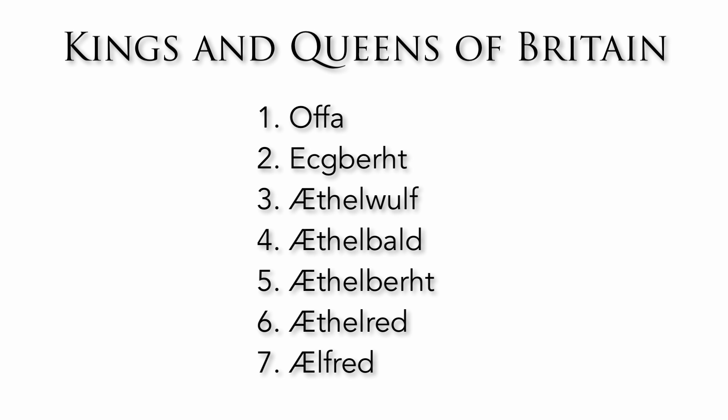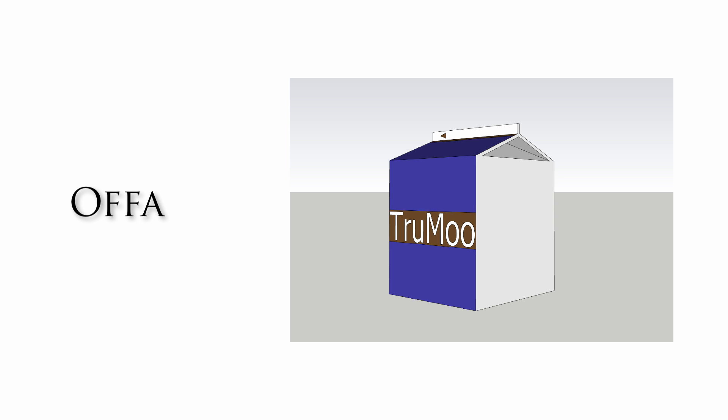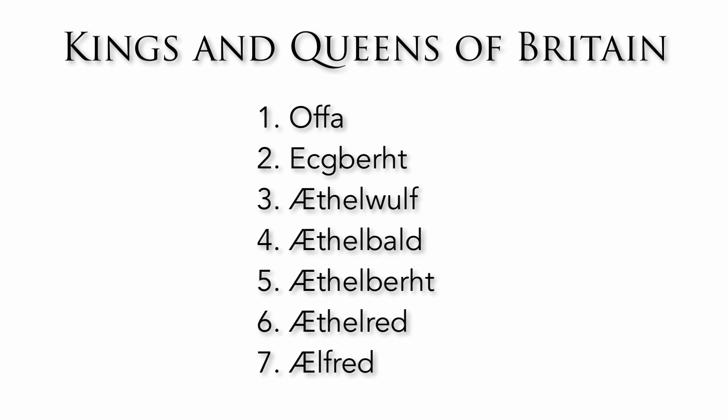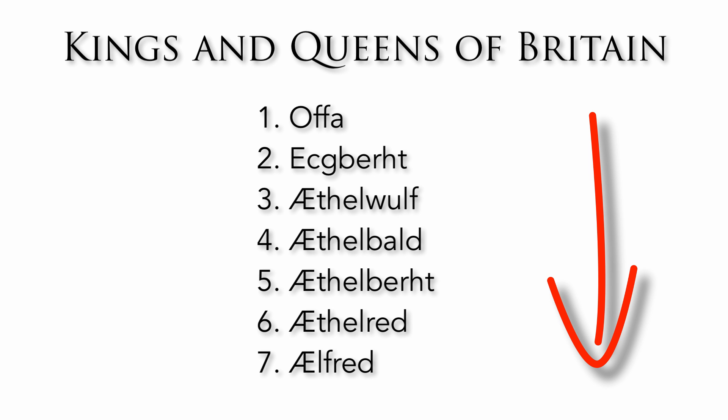Let's look at an example of how this works. Here are the first seven kings and queens of Britain. If you wanted to learn these names, the first step is to turn them into images. For example, we can take the name Offa and turn it into a large carton of milk that has gone bad — the milk has gone off — so this image reminds us of the name Offa. You will need to create your own image based on your own association. We can go through and continue this process with the other names in the list.